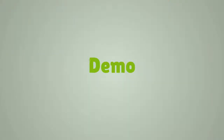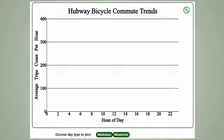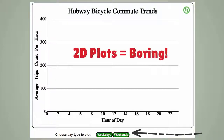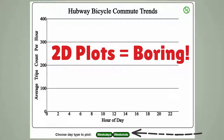We next demo the final results produced from our data analytics and simulation process. Here we show our user interface that generates the final 2D plots of the annual commute behavior of the riders. You can choose to plot either the weekday or weekend annual commute trends. Since regular 2D plots are boring, we decided to animate these 2D plots using D3. This was also a good warm-up to figure out the basics of animating SVGs in preparation for the later task of using D3 to do the bike simulation.